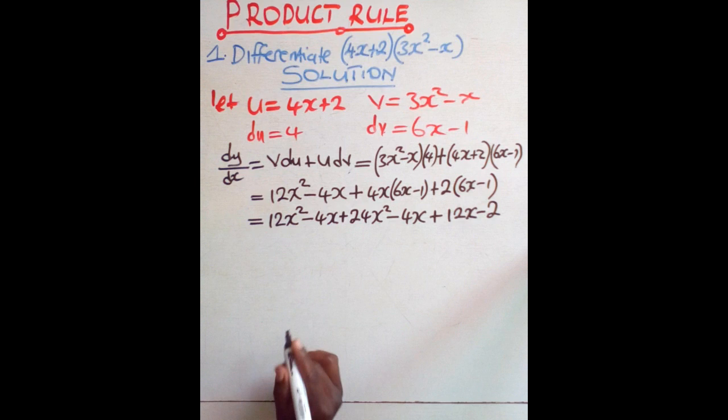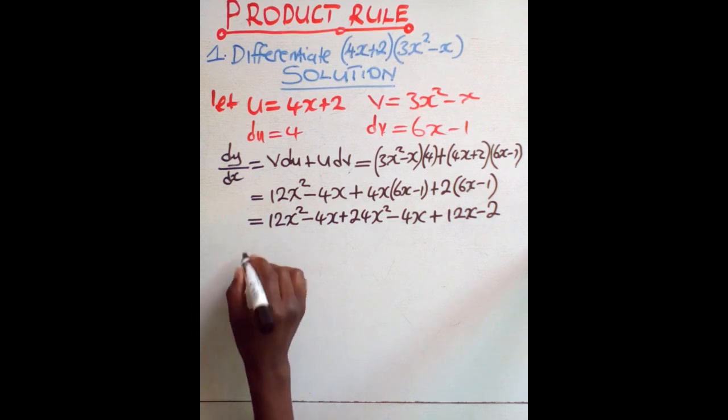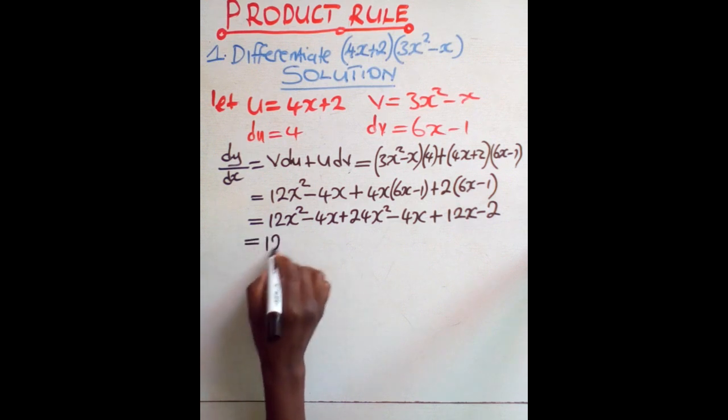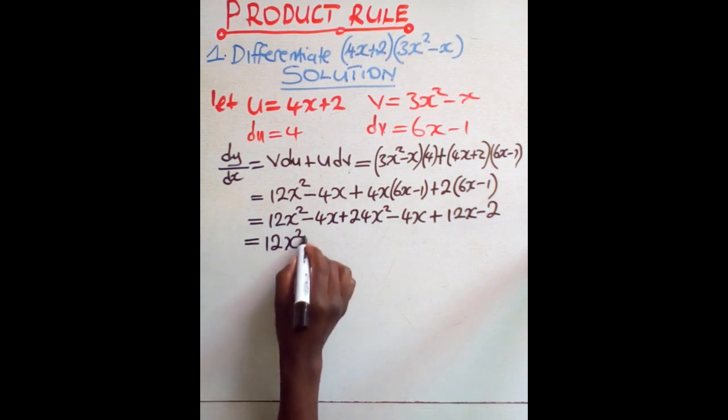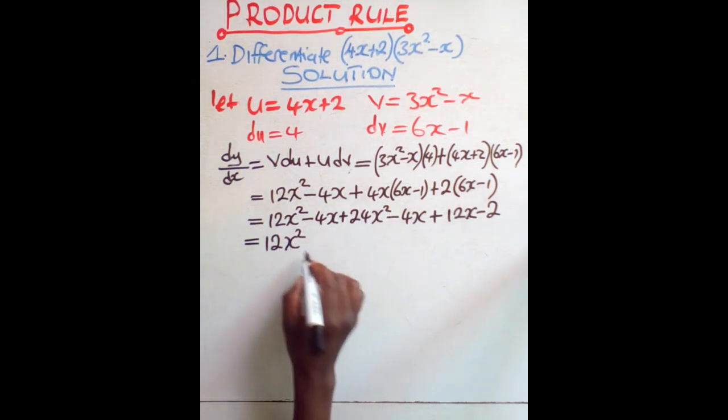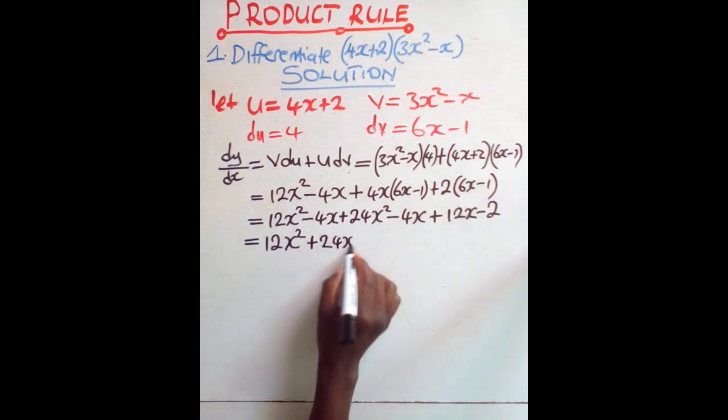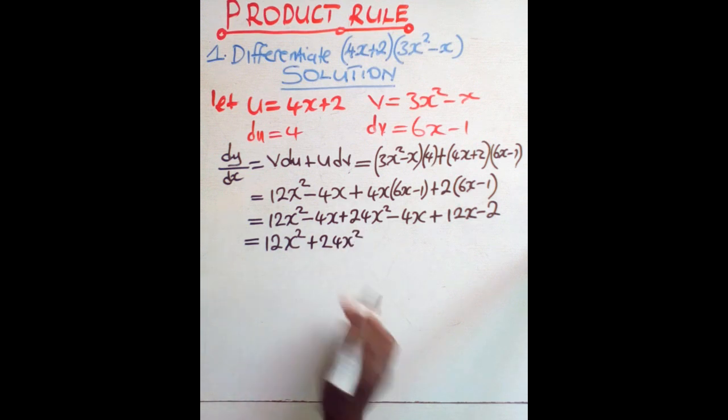At this point we can now collect like terms. So if you have to collect the like terms, then you say this is equal to 12x squared. This is x squared, so plus 24x squared. In terms of x squared we have collected.